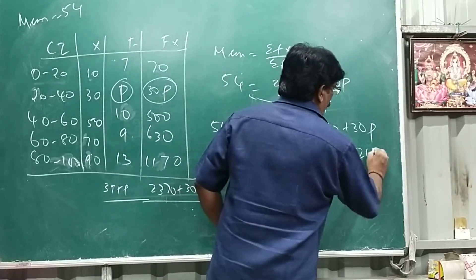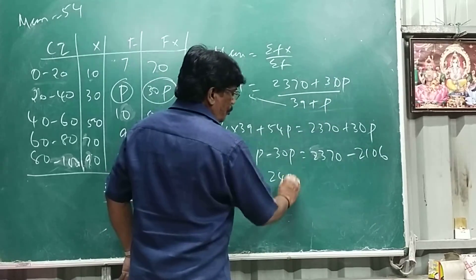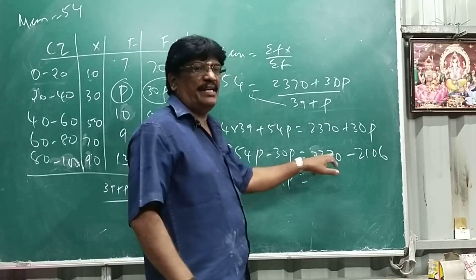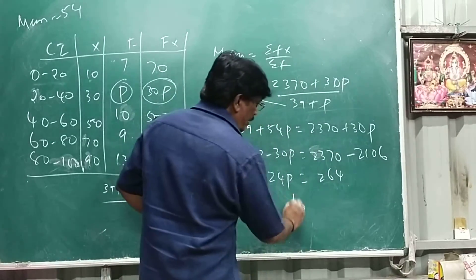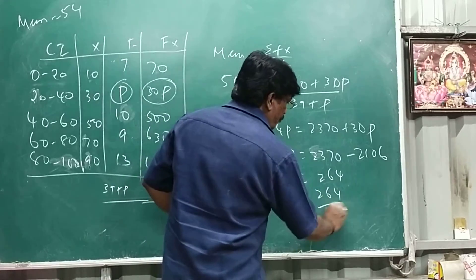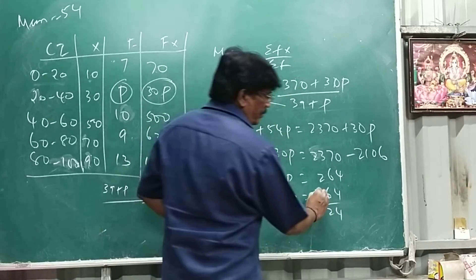So this become 24p, subtract this 264. So this becomes 24p equals 264, P equals 264 by 24, so cancel by 2 table.